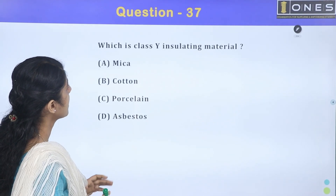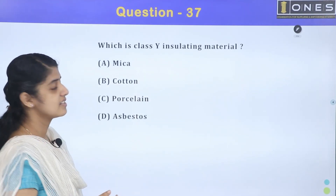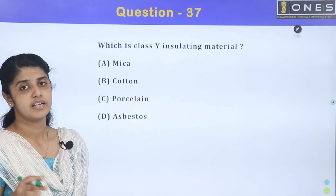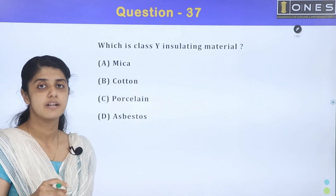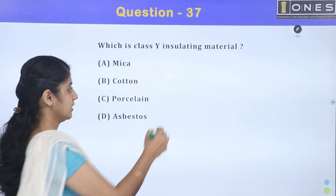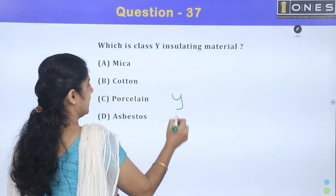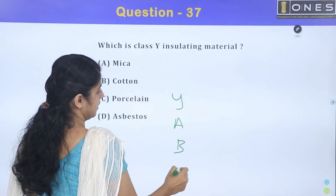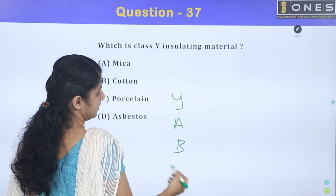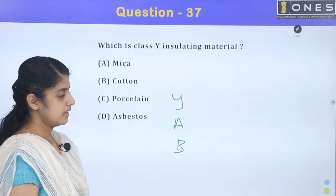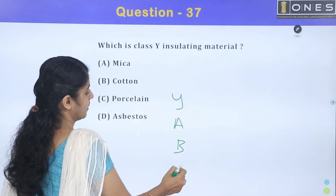Next question: which is class Y insulating material? We divide insulation classes — Y, A, B, C, and E — based on their temperature ratings.